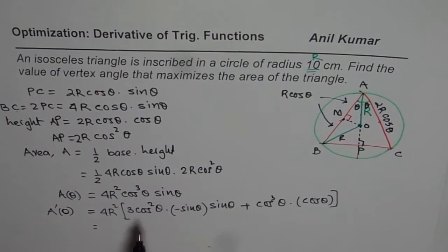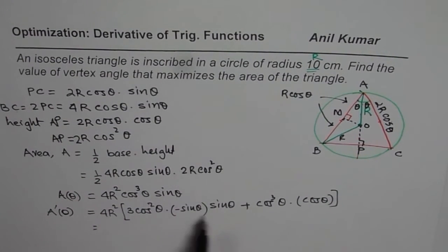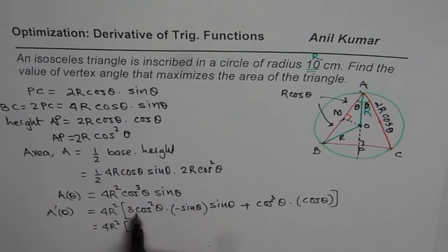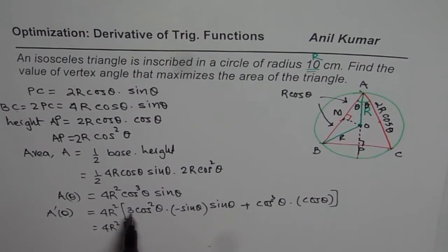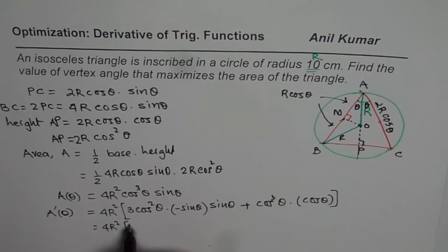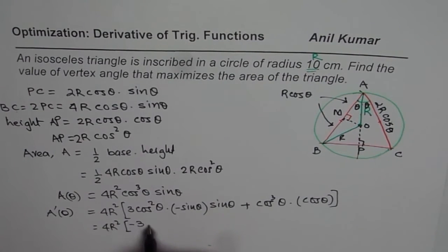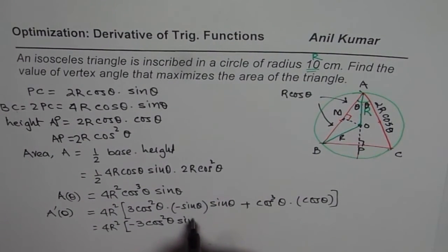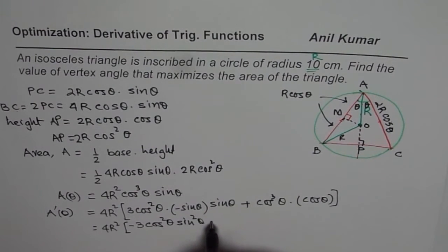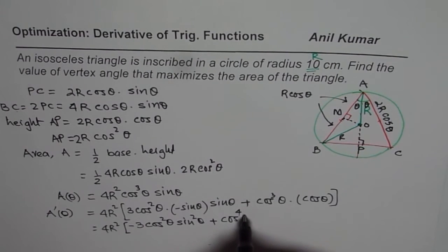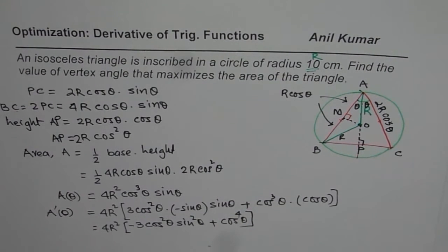Simplifying the derivative, we get 4r² times (−3·cos²θ·sin²θ + cos⁴θ). Factoring out cos²θ, we are left with cos²θ · (cos²θ − 3·sin²θ). That is the expression for the first derivative.